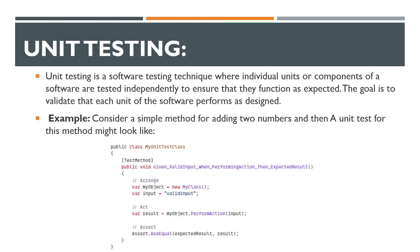Consider a simple method for adding two numbers — a unit test for this method might look like this. A unit test is just a class, and inside that class we have a method named as 'Given valid input, When performing action, Then expected results'. We have a class object, a valid input parameter (basically a string), and when we pass that mock string into the perform action method, the result will come and we will assert that output.